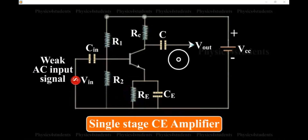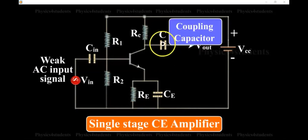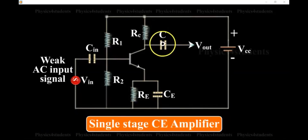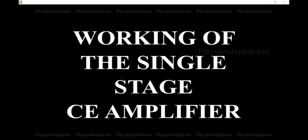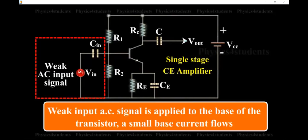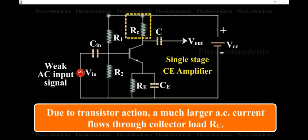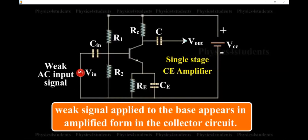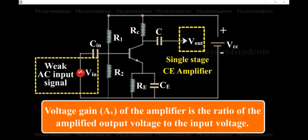The coupling capacitor C is used to couple the amplified signal to the output device. This capacitor C allows only AC signal to flow. Regarding the working of the single-stage CE amplifier: when a weak input AC signal is applied to the base of the transistor, a small base current flows. Due to transistor action, a much larger AC current flows to the collector node RC. A large voltage appears across RC and hence at the output. Therefore, a weak signal applied to the base appears in amplified form in the collector circuit. The voltage gain AV of the amplifier is the ratio of the amplified output voltage to the input voltage.